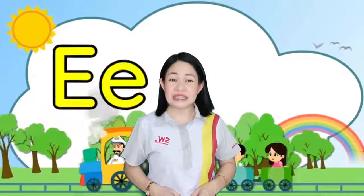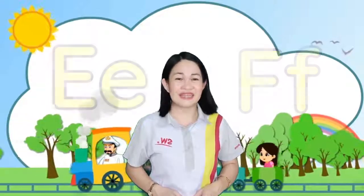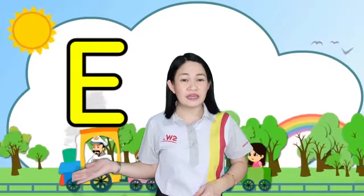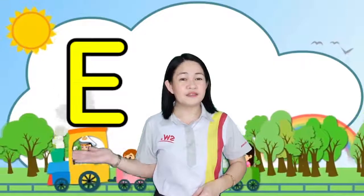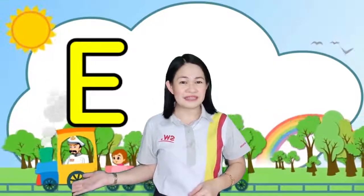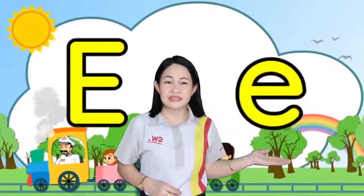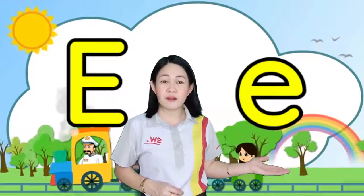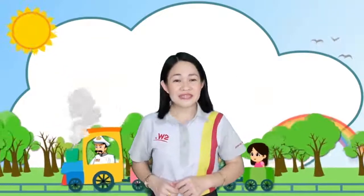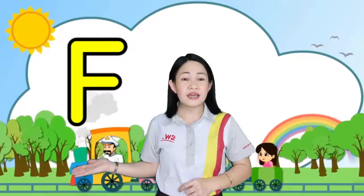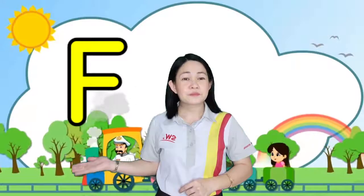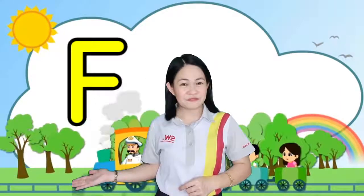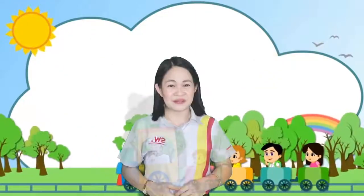In today's video, we are going to learn the letters E and F. This is the big letter E. One more time — this is the big letter E. And this is the small letter E. One more time — this is the small letter E. This is the big letter F. One more time — this is the big letter F. And this is the small letter F. Very good, kids.